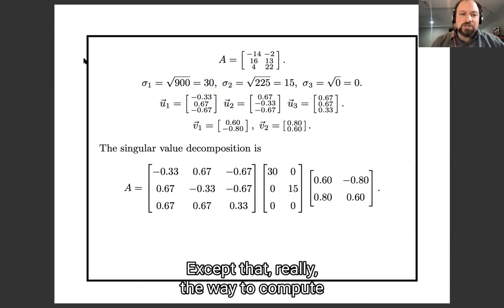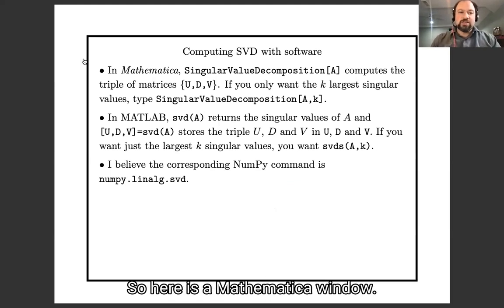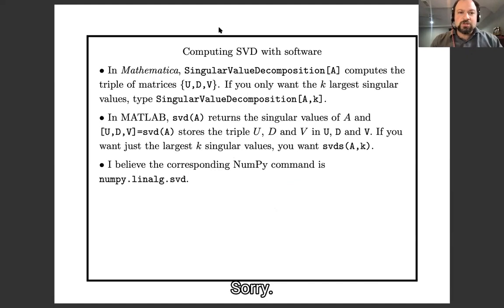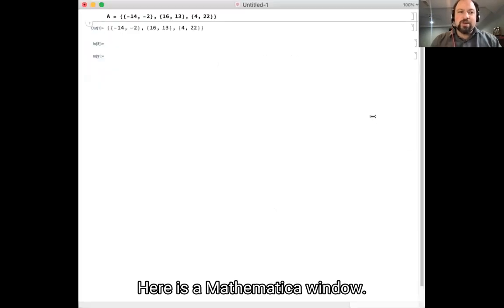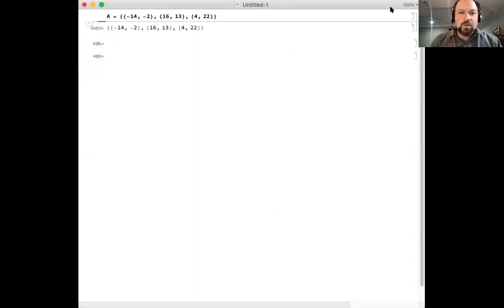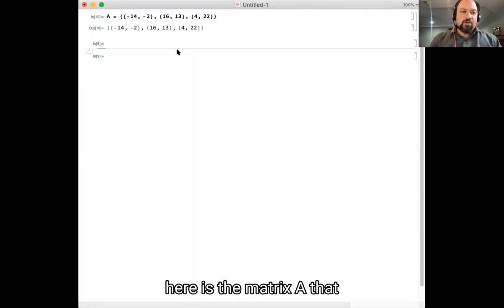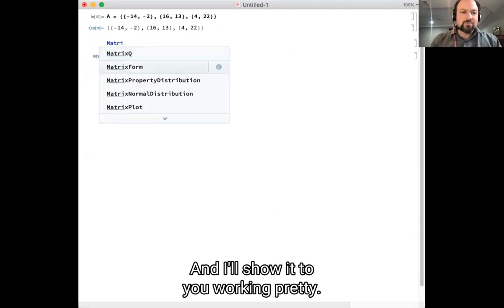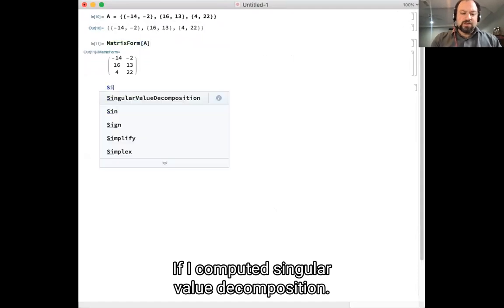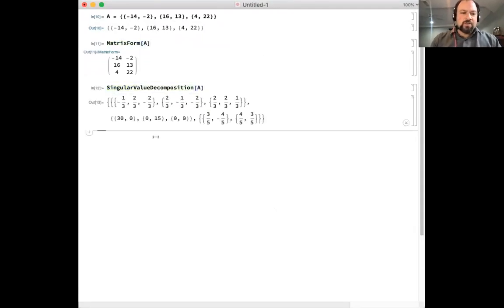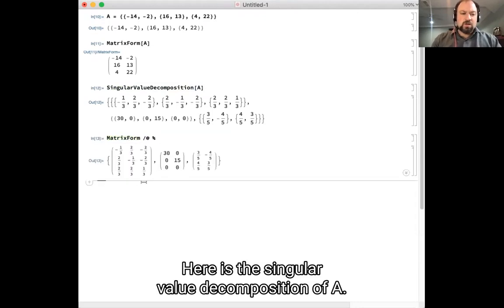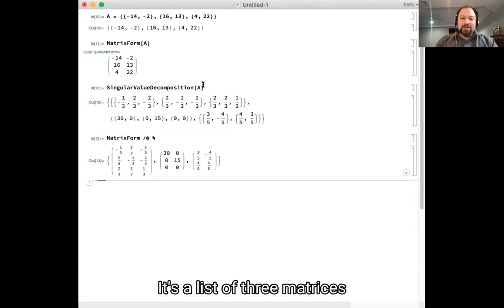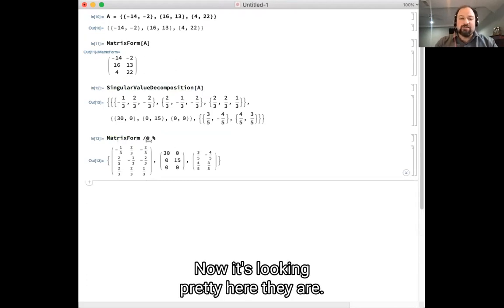Except that really, the way you compute singular value decomposition is like this. So here is a Mathematica window. Here is a Mathematica window. Up here is the matrix A that we've been using as our running example, and I'll show it to you looking pretty. If I compute it singular value decomposition. And again, I'll make that look pretty for you. Here is the singular value decomposition of A. It's a list of three matrices. Now I've just turned it to display each matrix of that list looking pretty. Here they are.